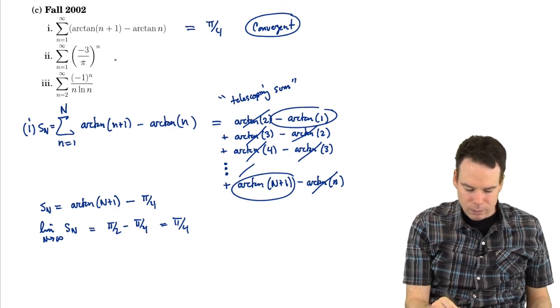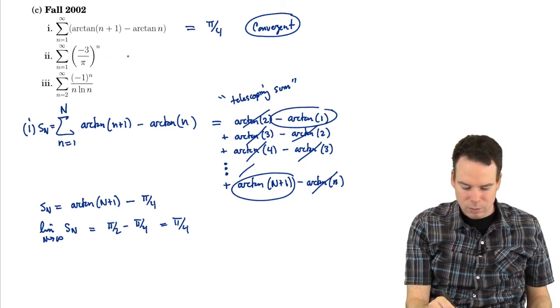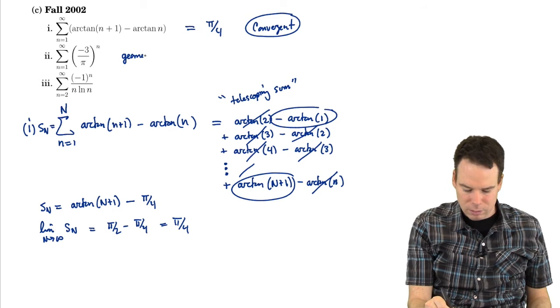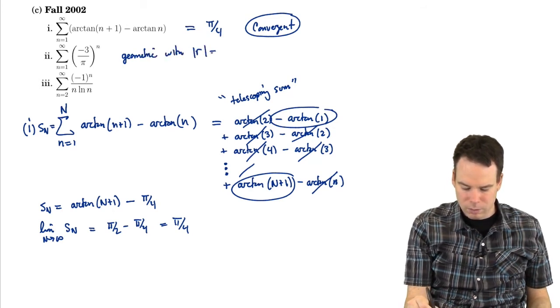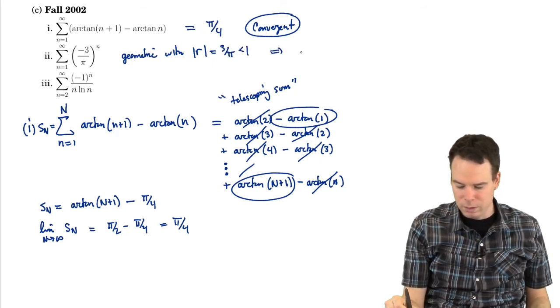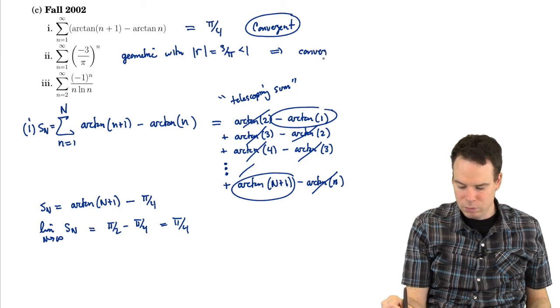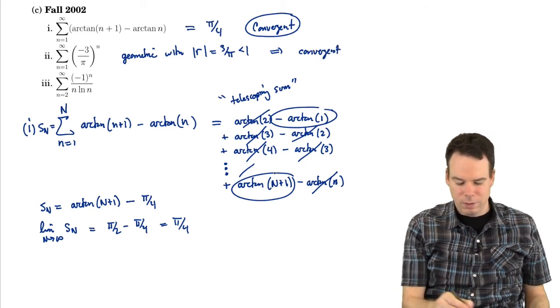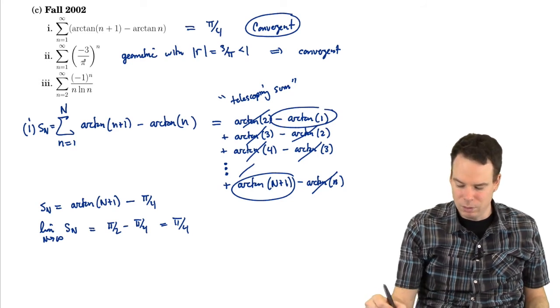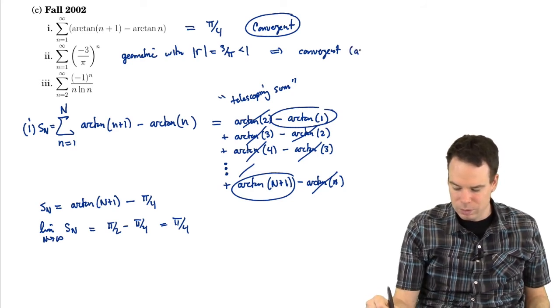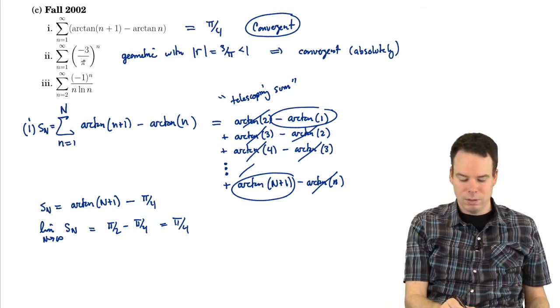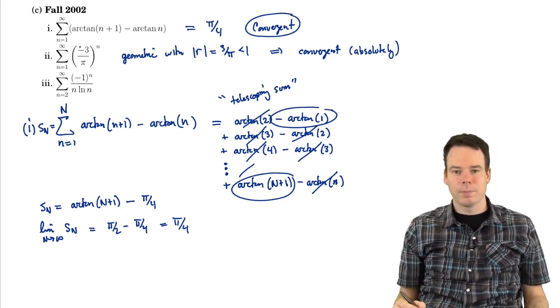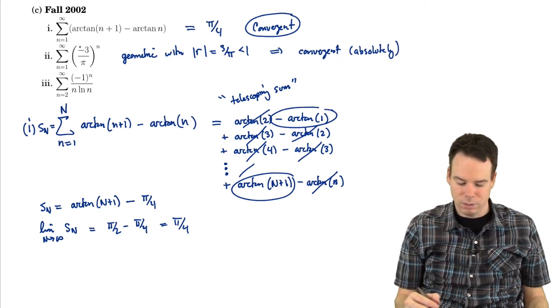What about this one? Convergent or divergent? Well this is geometric with the r value in magnitude being 3 over π, which is less than 1. So that implies it's convergent. In fact, it converged regardless of whether there was a negative sign there or not. So we would say then that that is actually in fact absolutely convergent. Even the series where the negative sign wasn't there would converge. So it converges absolutely.